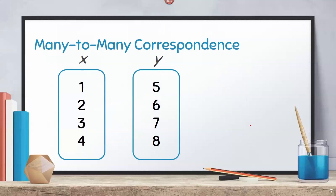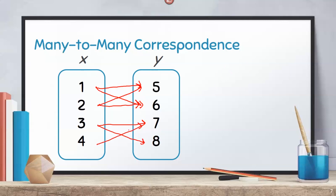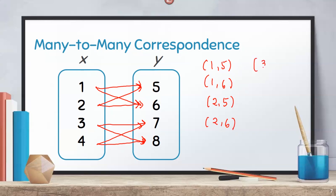Finally, many-to-many means pairing multiple values of x to multiple values of y. For example, pairing 1 and 2 to 5 and 6, and pairing 3 and 4 to 7 and 8. Therefore, we can form here 8 ordered pairs, such as (1,5), (1,6), (2,5), (2,6), (3,7), (3,8), (4,7), and (4,8).